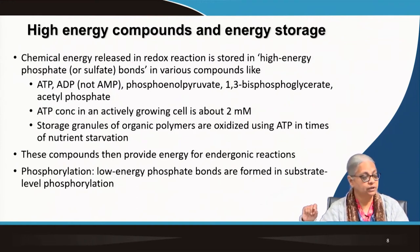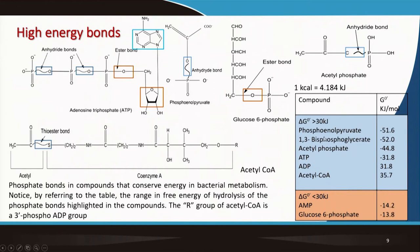For example, glucose 6-phosphate is generated in glycolysis — it is a low-energy bond. AMP, adenosine monophosphate, and glucose 6-phosphate are low-energy bonds. The high-energy bonds include ATP, phosphoenol pyruvate, acetyl phosphate, and acetyl-CoA — these are anhydride bonds. We will be looking at all of these compounds when we understand how energy is generated by bacteria and other organisms in various redox reactions.